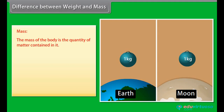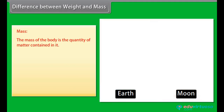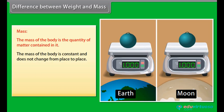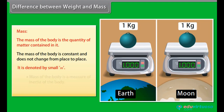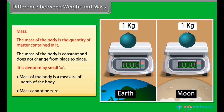Difference between weight and mass. Mass: the mass of the body is the quantity of matter contained in it. The mass of the body is constant and does not change from place to place. It is denoted by small m. Mass of the body is a measure of inertia of the body. Mass cannot be zero.